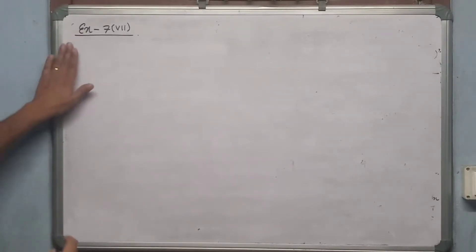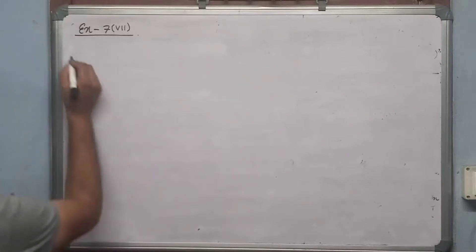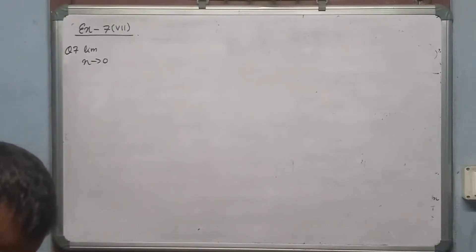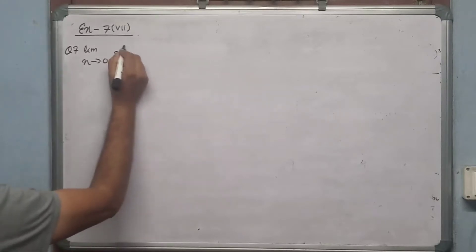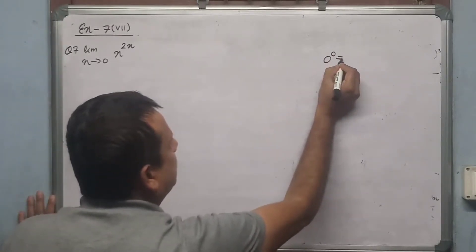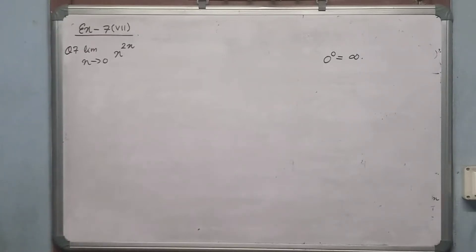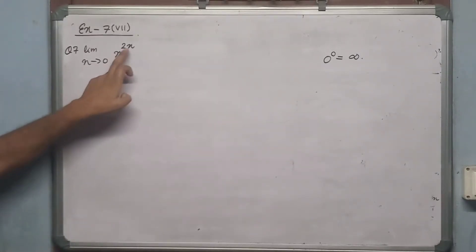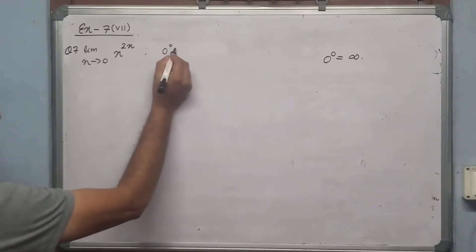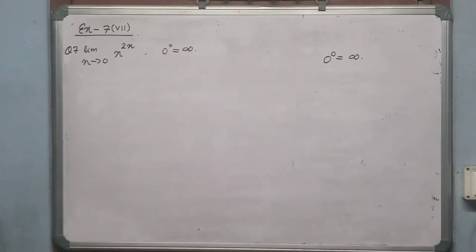For class 12 students, we continue with L'Hospital's theorem, Exercise 7.7, question number 7: limit x tends to 0 of x to the power 2x. If we substitute x tends to 0, we get 0 to the power 2×0, which is 0 to the power 0. This is an indeterminate form — 0 to the power 0 is undefined.